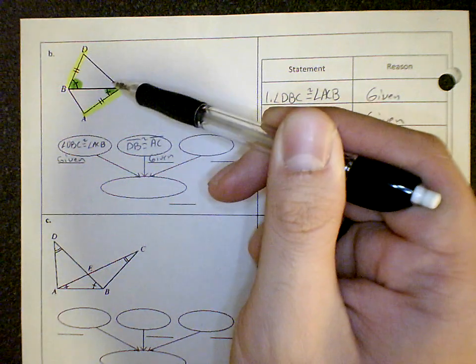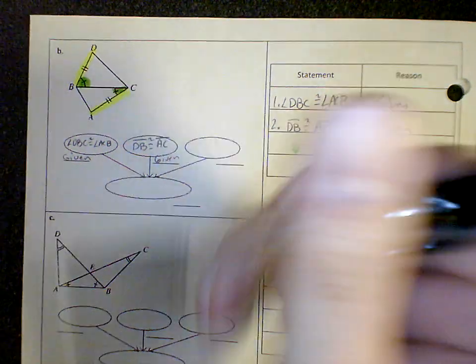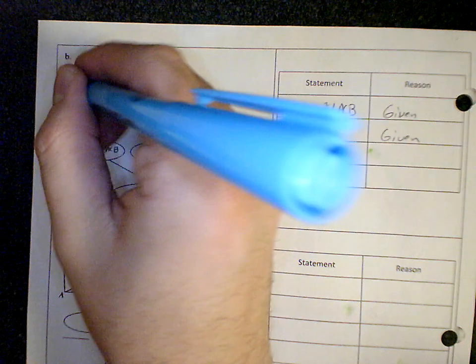Or maybe we need to know these angles, but I don't know those either. So then maybe I have a side, an angle, and a side, and that is what I need.